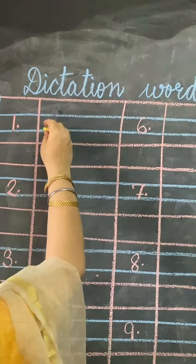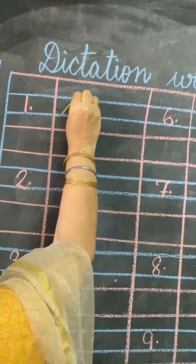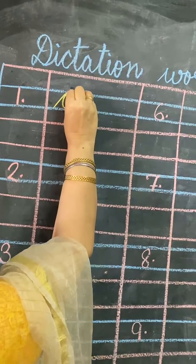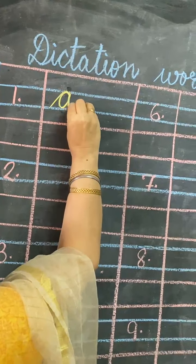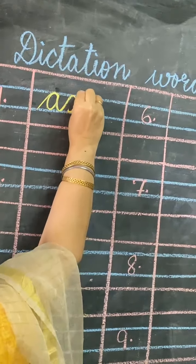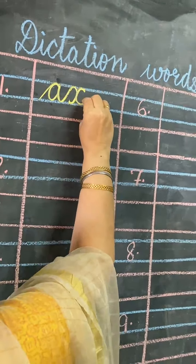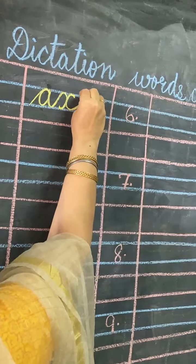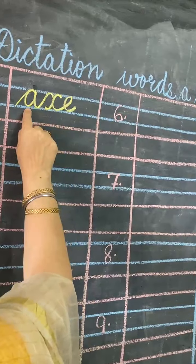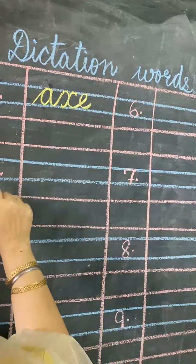First dictation word is A for Axe. A will come in two middle lines. X also will come in two middle lines. E will come in two middle lines. A for Axe: A, X, E, X. Number 2.